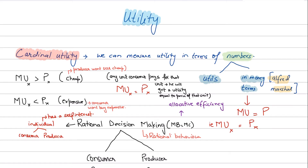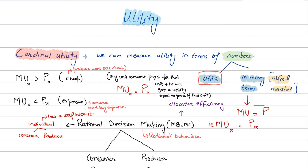In the previous video we discussed briefly what is the ordinal utility approach and what is the cardinal utility approach — two different ways to measure utility. Cardinal utility is when we measure utility in terms of numbers, either in utils (an imaginary unit where one unit equals one utility), or in money terms as Alfred Marshall proposed. Marshall said that utility can be measured in money terms where the value of utility is equal to the price, establishing that MU equals P.